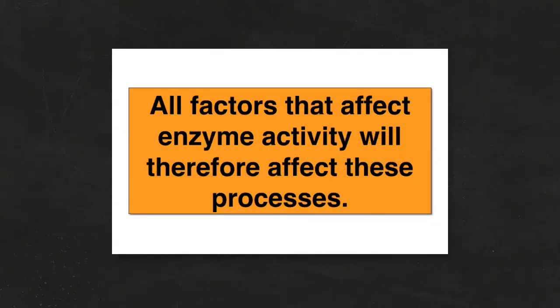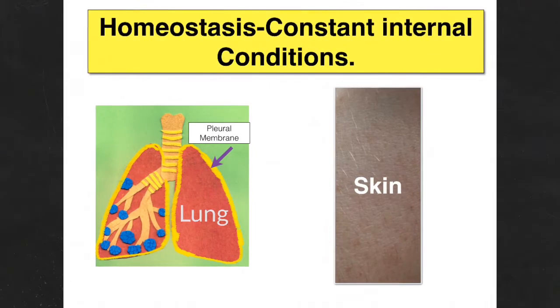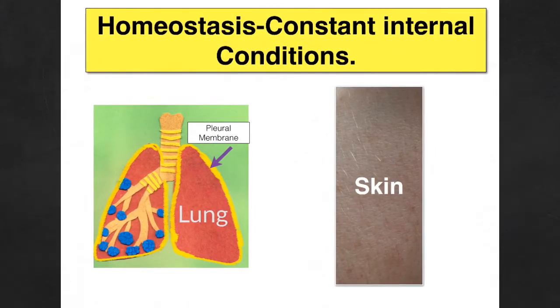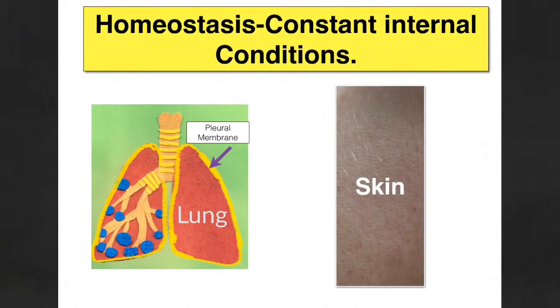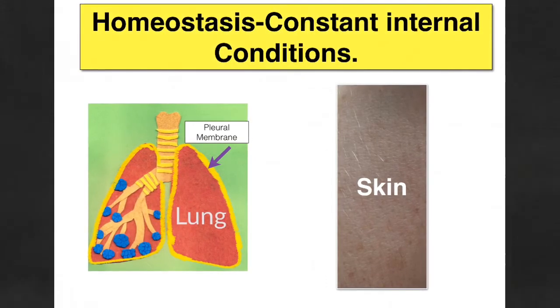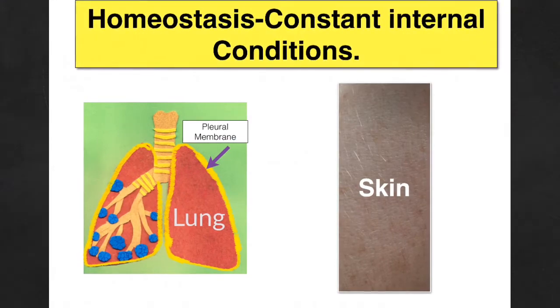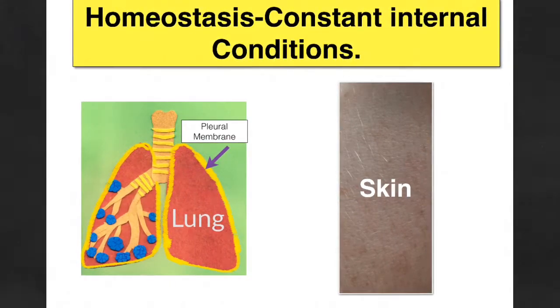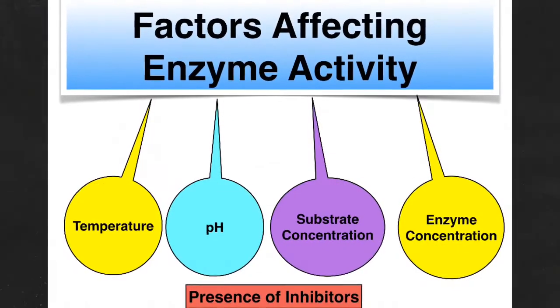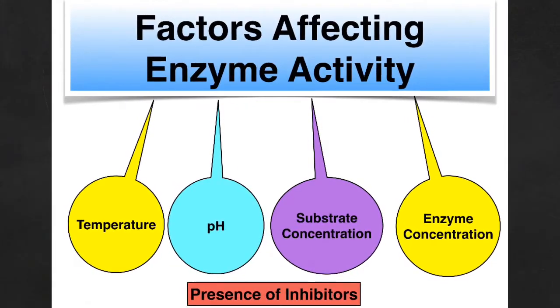So I hope you're making the connection that all factors that affect enzyme activity such as pH and temperature will also affect these processes we've just discussed, aerobic respiration and photosynthesis. This links in nicely with homeostasis, which means maintaining constant internal conditions and two examples of which would be maintaining pH and maintaining temperature. And the reason you want to maintain them is to ensure that those enzyme controlled reactions can proceed as they should, not forgetting all of the other factors which will affect enzyme activity.